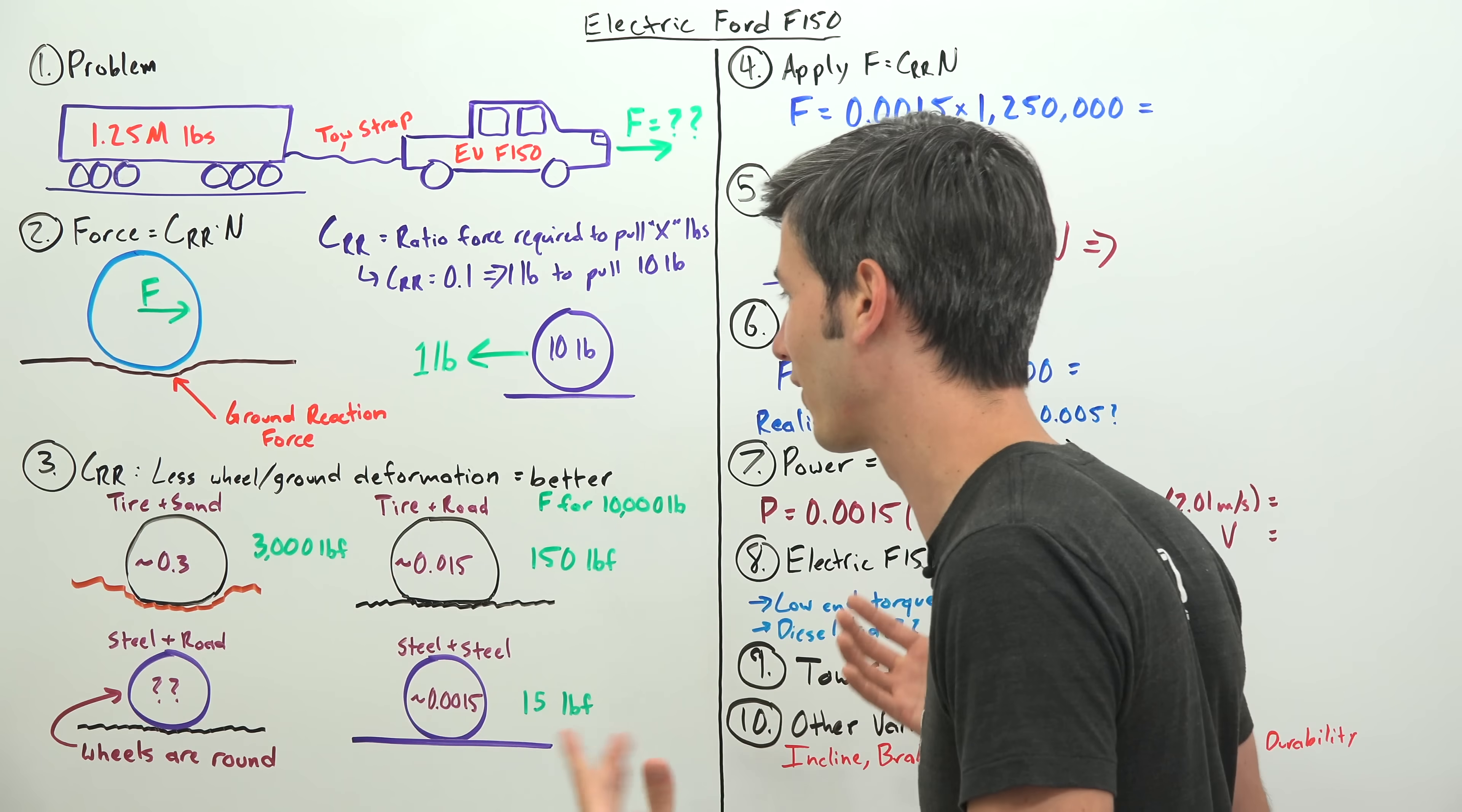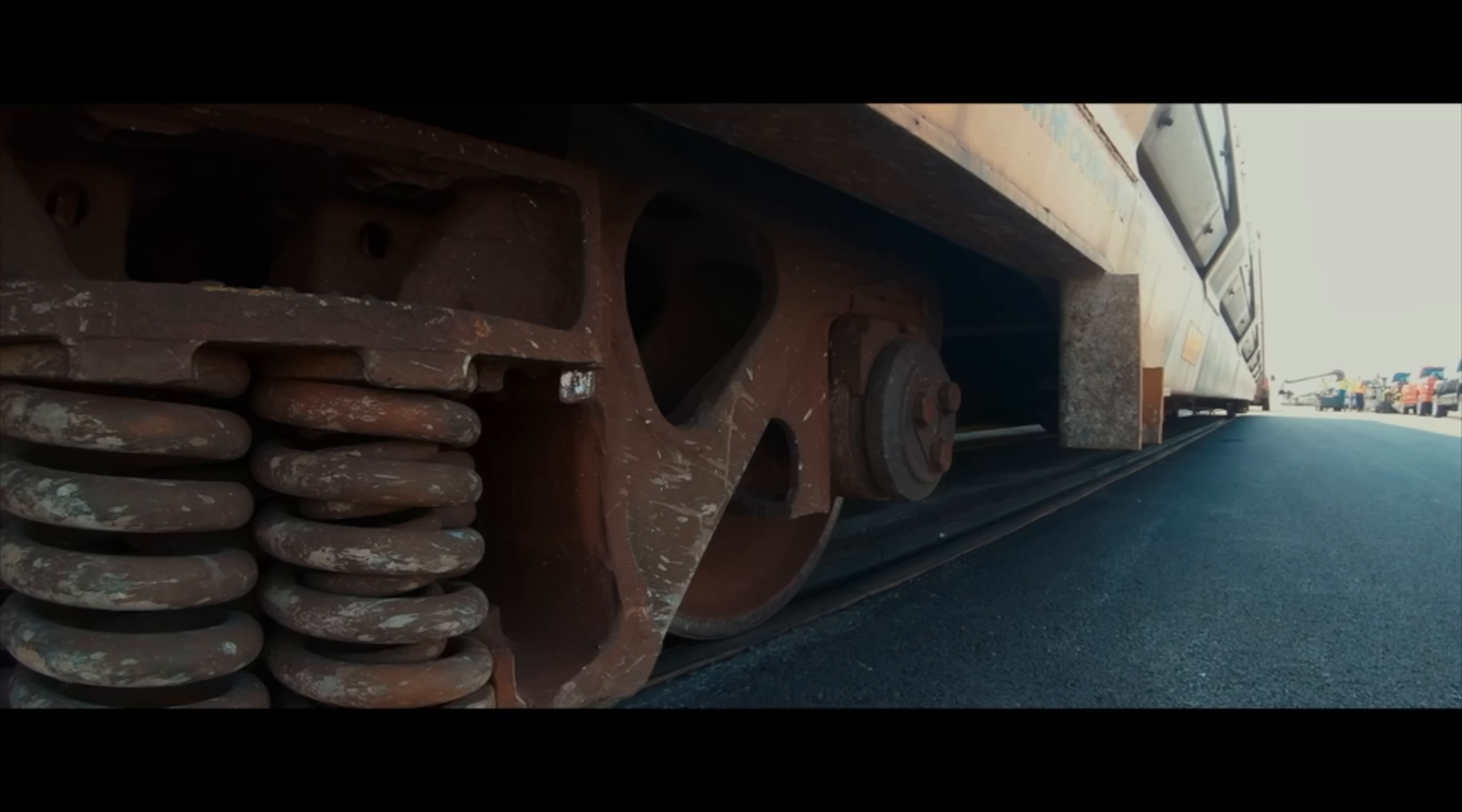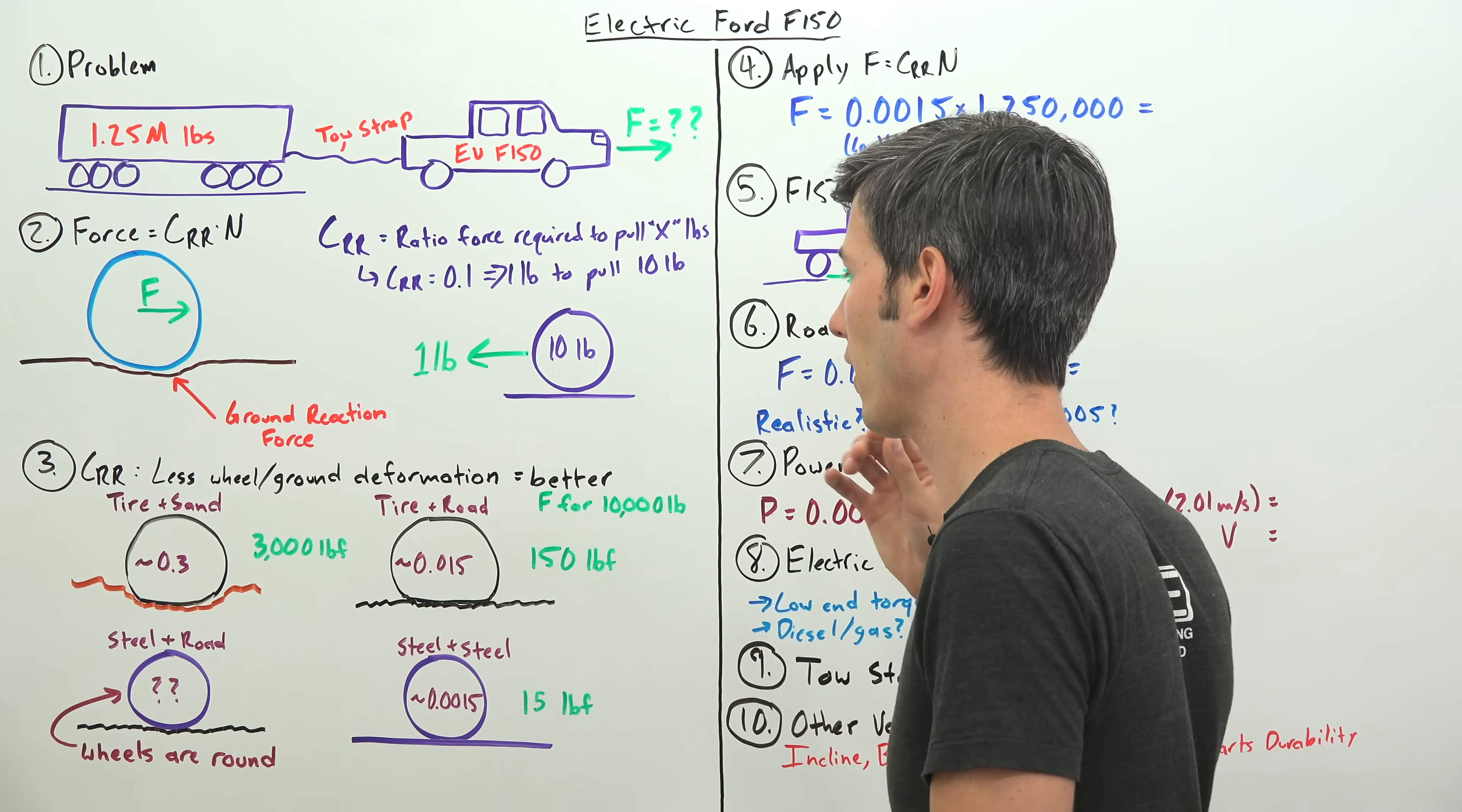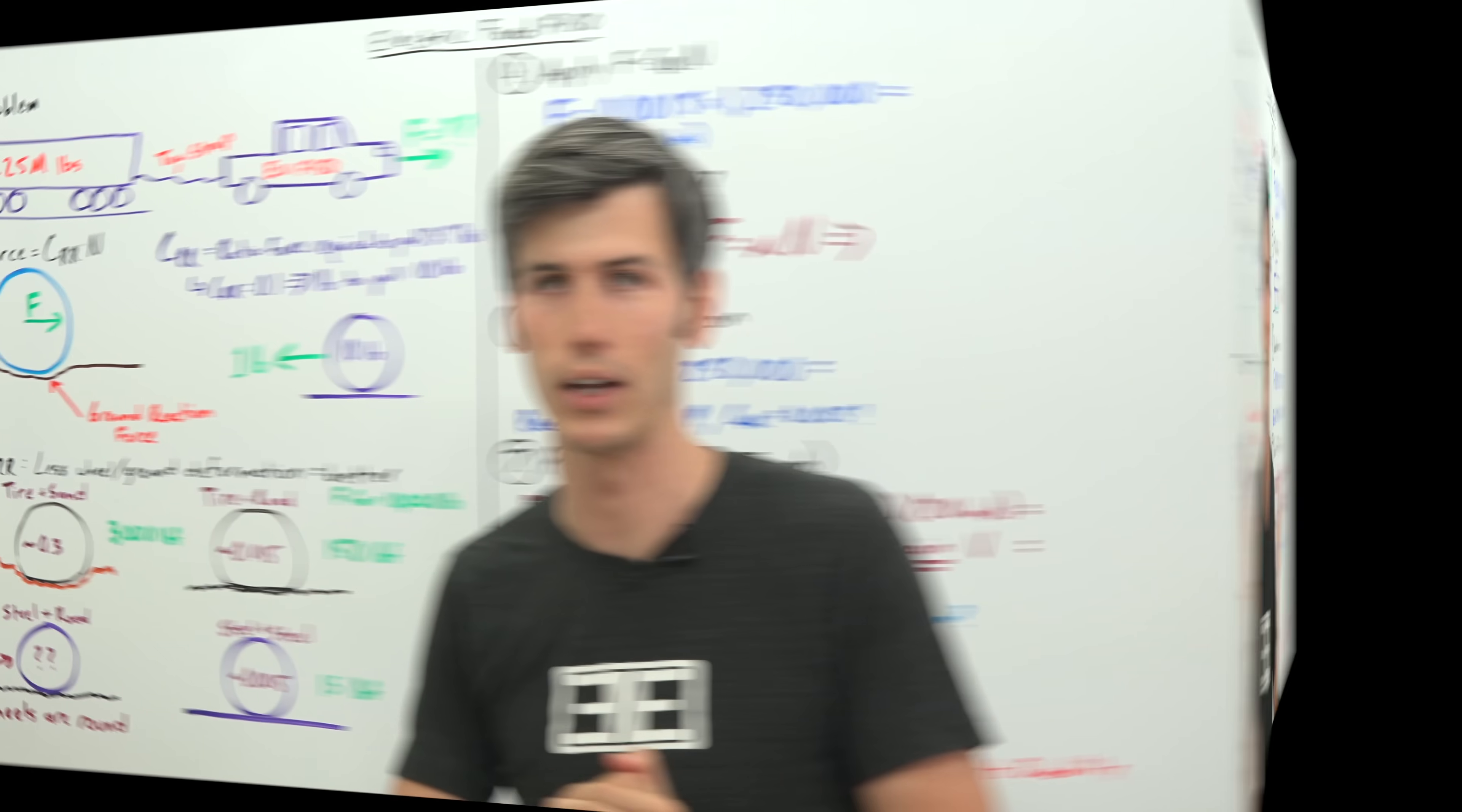So you're starting to see where this is going. If you have a steel railroad wheel on pavement, that's a terrible idea because you'll destroy the road. Which is why you see steel railroad wheels on steel railroad rails. This steel on steel interaction is great because both the steel wheel and the steel rail have very little deformation. As a result, they have a very low coefficient of rolling resistance, about 0.0015, meaning to pull a 10,000 pound weight, all you need is 15 pounds of force.